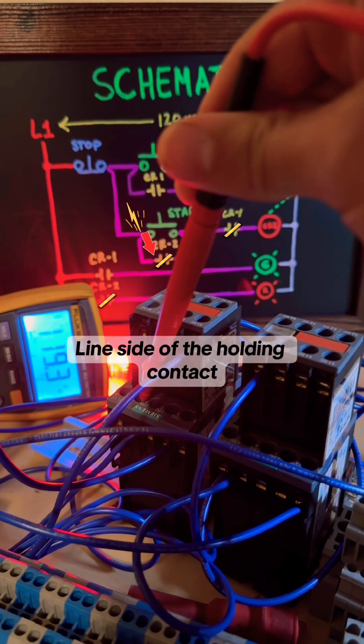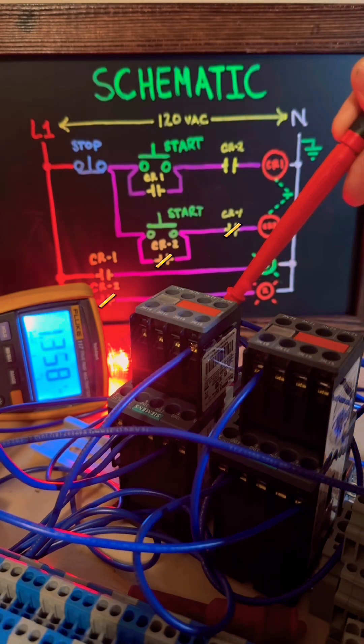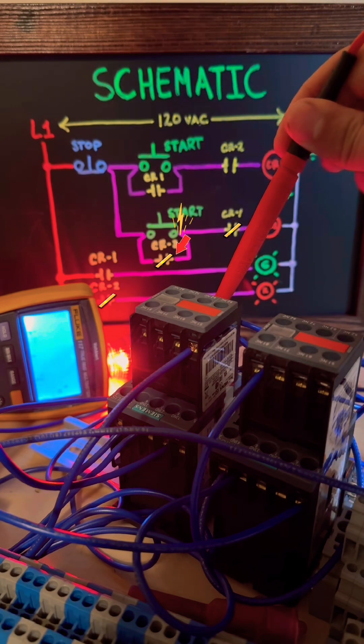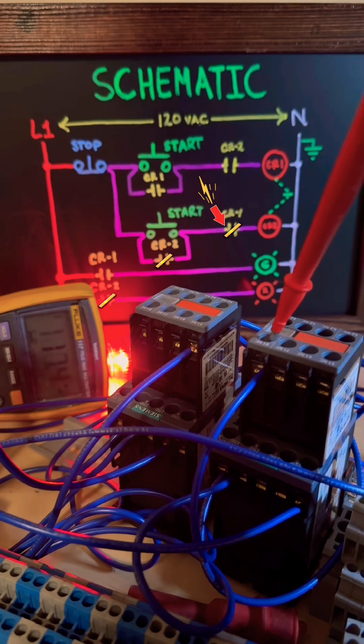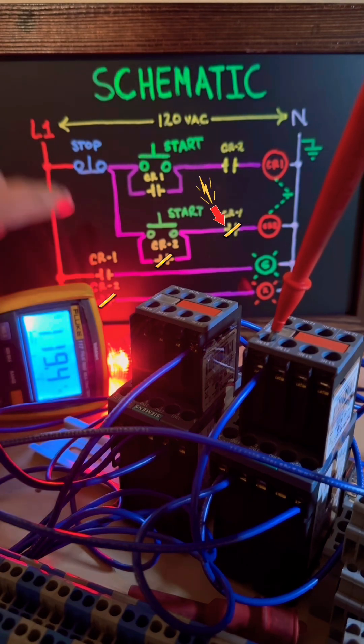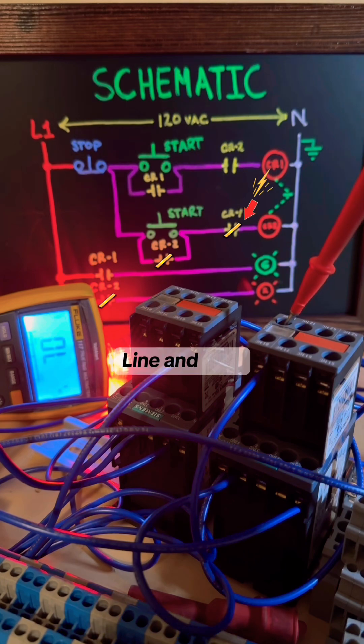Line side of our holding contact, 120. 120 on the load side. Now our normally closed shows 120 line and load.